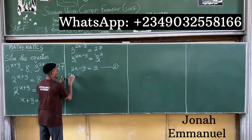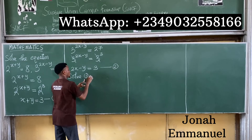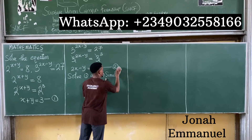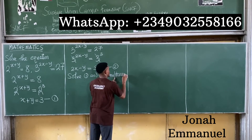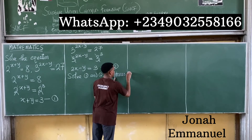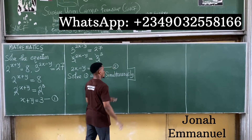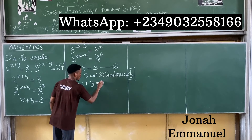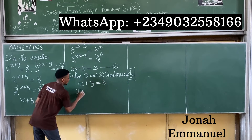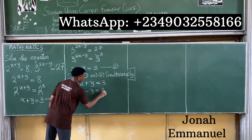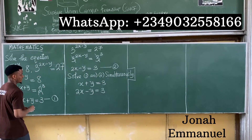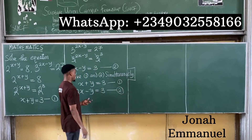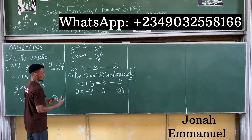From here, I have to solve equations 1 and 2 simultaneously. From equation 1: x plus y equals 3. From equation 2: 2x minus y equals 3. You can solve this using substitution or elimination method, whichever suits you. I'm going to use elimination method, seeing that I have plus y and minus y — I can simply add them.